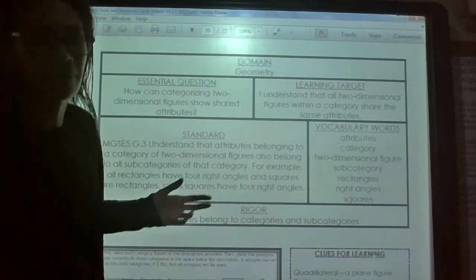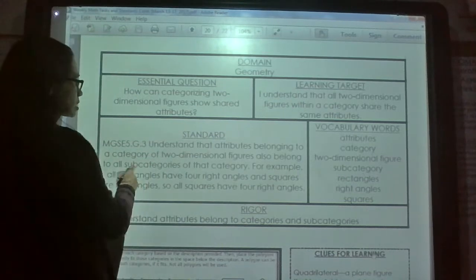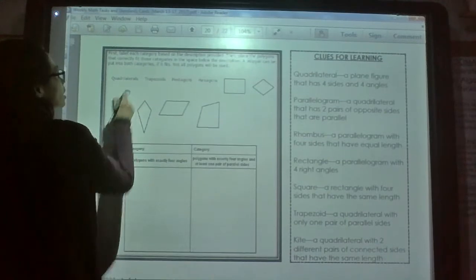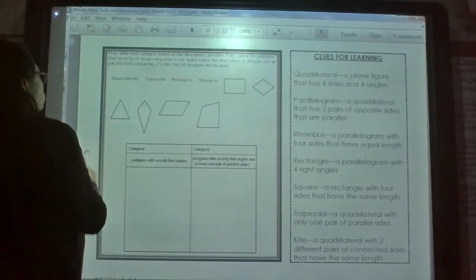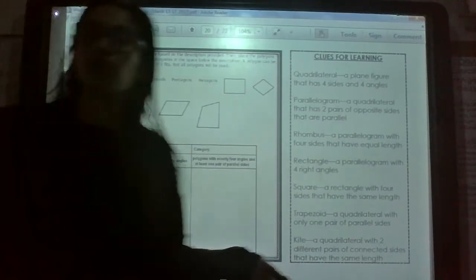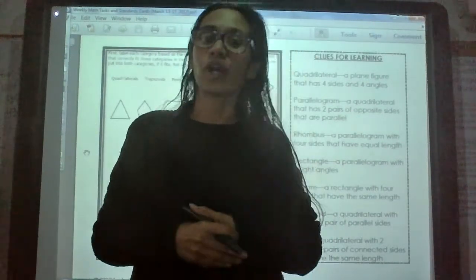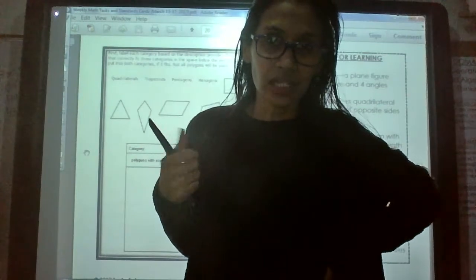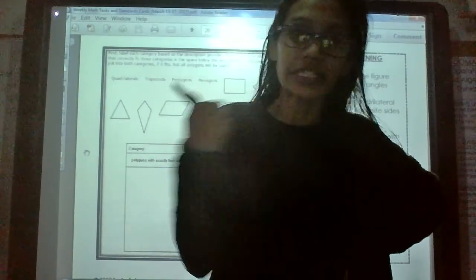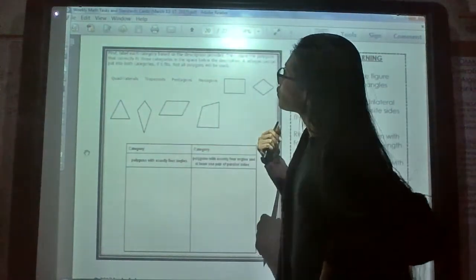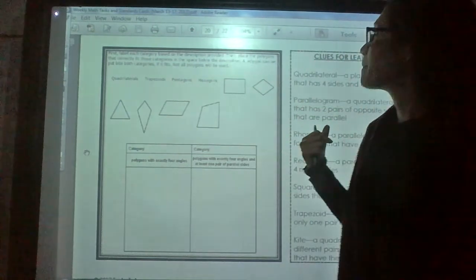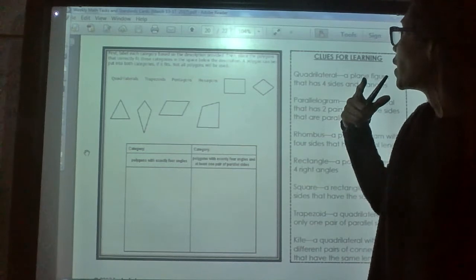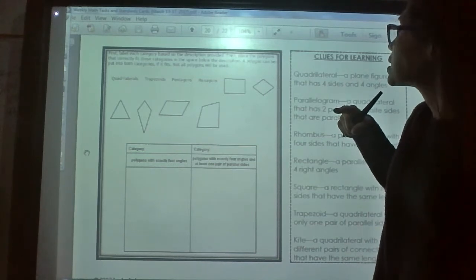Our challenge for this task is to understand that attributes belong to categories and subcategories. Make sure you're working on the correct task — I have a separate video for the other side. Now, do you have your pencil and your journal? Let's begin. It says: first, label each category based on the description provided.